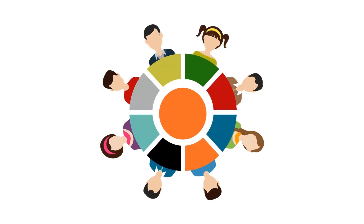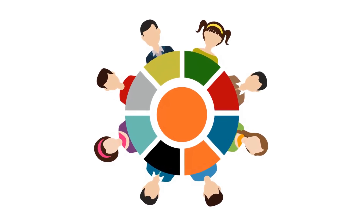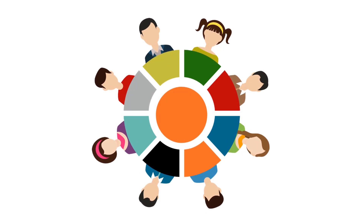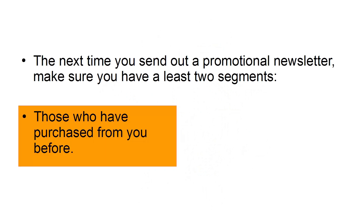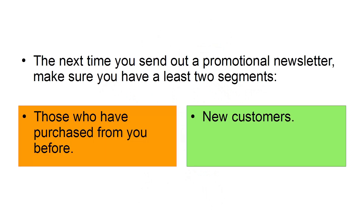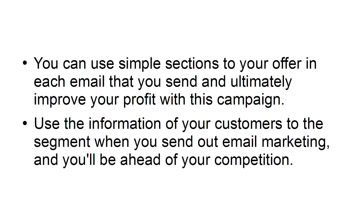Segment your users. The most obvious place you can start is segmentation. You don't want to send everyone the same thing. Even the most straightforward segmentation can pull you well ahead of the competition. The next time you send out a promotional newsletter, make sure you have at least two segments – those who've purchased from you before and new customers. You can use simple sections to your offer in each email that you send, and ultimately improve your profit with this campaign. Use the information of your customers to segment when you send out email marketing, and you'll be ahead of your competition.